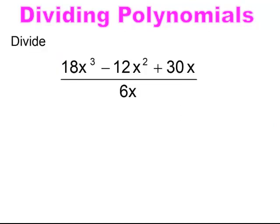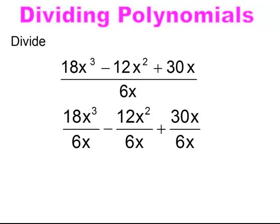Pause and try. I like to separate it into three separate problems, reduce piece by piece. You should have gotten your answer: 3x squared minus 2x plus 5.